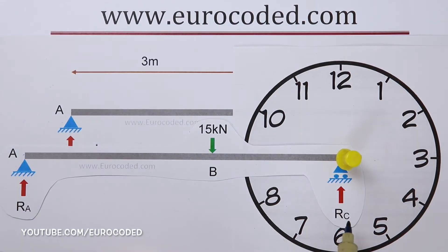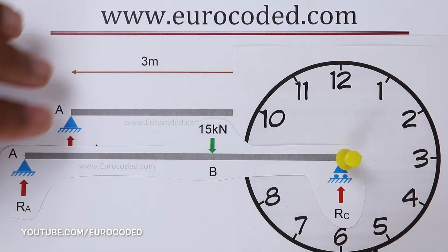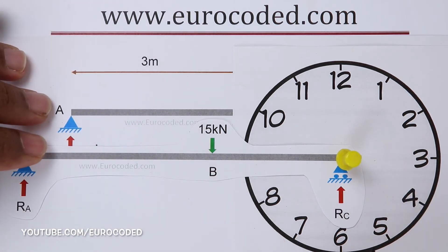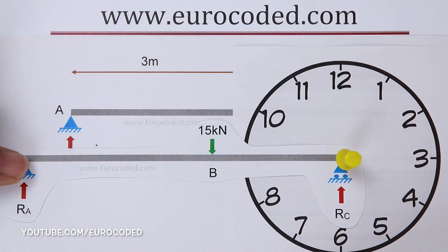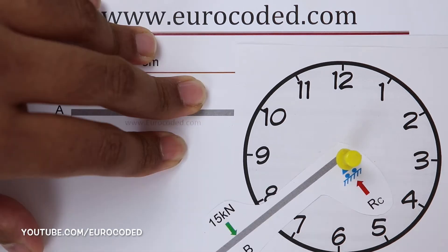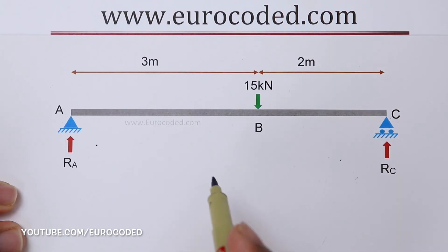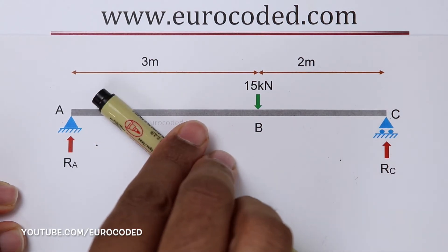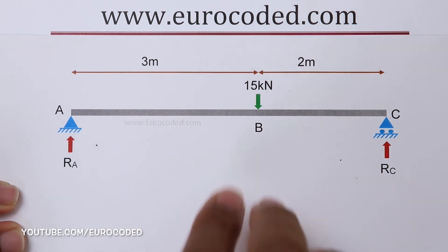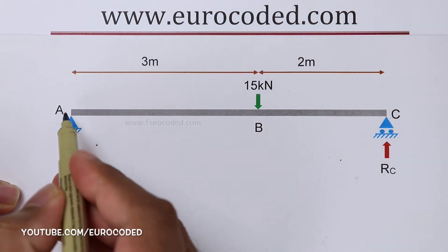Similar to what we did before, if we imagine point C is the center point of a clock face and our beam is the clock hand, this externally applied force would try to rotate this beam in an anticlockwise direction. I believe now you understand why a force has a clockwise or anticlockwise moment relative to a point.